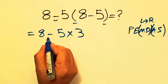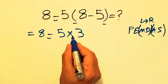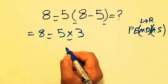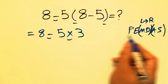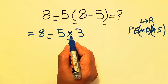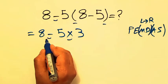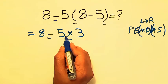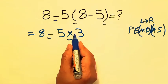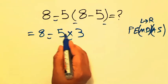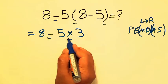Now, we have this subtraction and this multiplication. According to PEMDAS, multiplication has higher priority than subtraction. So, we have to do this multiplication first. 5 times 3 equals 15.